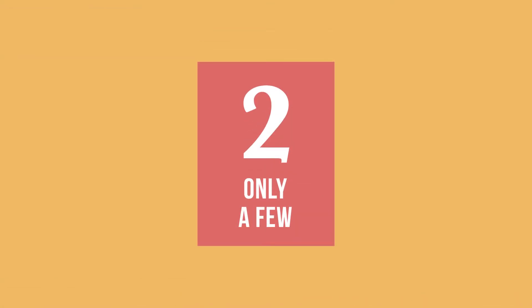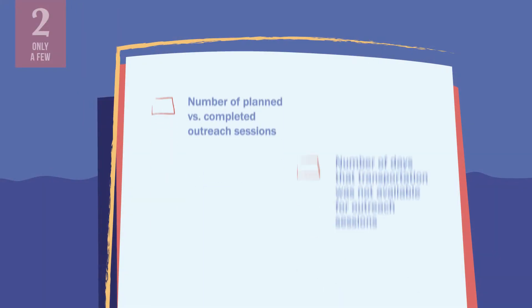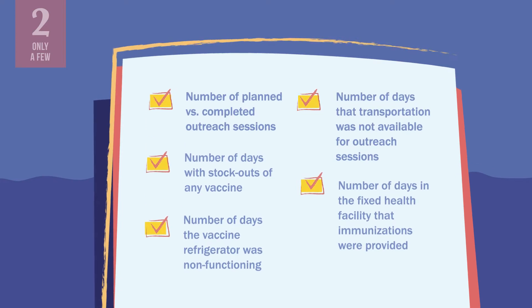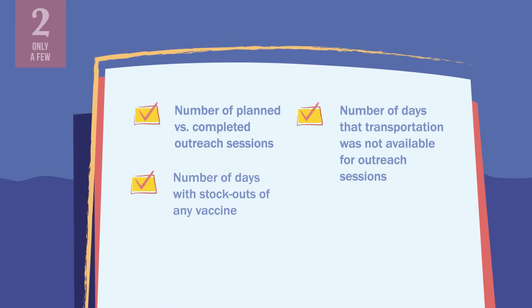The second quality of an indicator is that there should be only a few of them. You could track many things with indicators, but tracking too many indicators will quickly become such a burden that you may quit. National level decision makers usually prioritize three or four process indicators to track at the most.